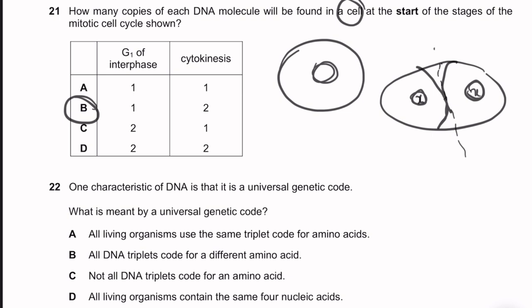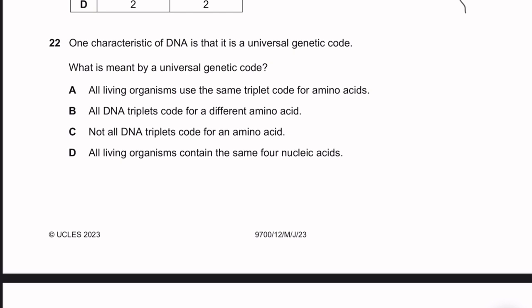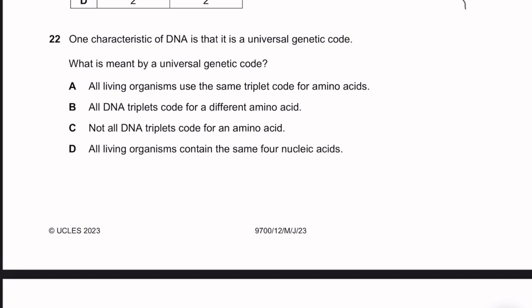Question 22: What is meant by the universal genetic code? All living organisms use the same triplet code for amino acids — that is correct. Not all DNA triplets code for amino acids, and organisms do not all contain the same four nucleic acids (some viruses use RNA). Answer: A.